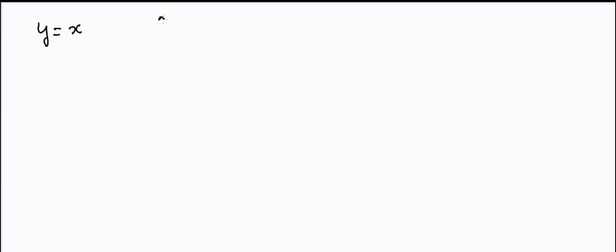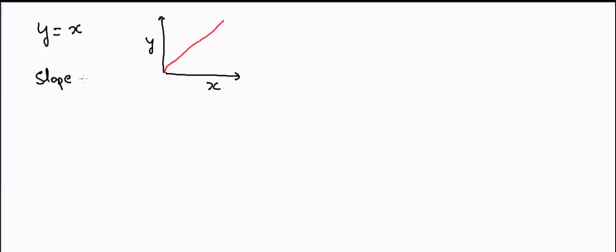Let me begin. Suppose I start with a simple equation: y is equal to x. If I have a y-axis and x-axis and I draw y = x, it will look something like this. When y is 0, x is 0; when y is 1, x is 1. This line goes from the center, and the slope is calculated as the coefficient of x, which is equal to 1. So y scales with x — if x is 1, y is also 1.